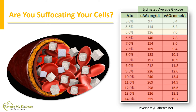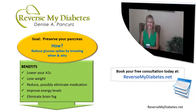Take a look at this chart. How much sugar is attached to your cells? Are you in the green or yellow range? Are you already in the red range? Are you suffocating your cells? The goal is to learn to preserve your pancreas — that is the organ that produces your own insulin.